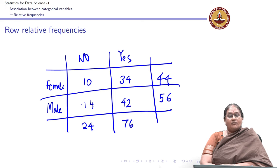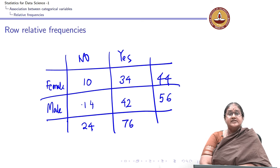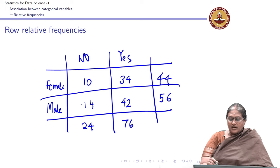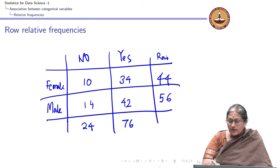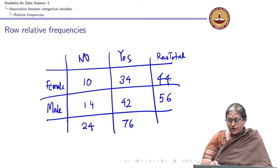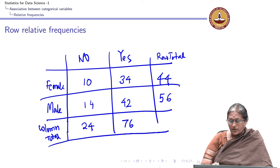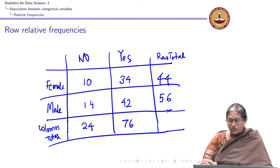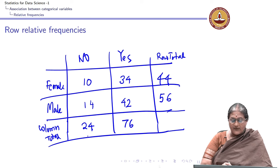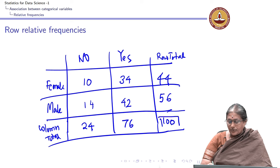Recall that this is the contingency table. The row totals are 44 females and 56 males. The column totals are 76 and 24. The total of the row totals and the total of the column totals are equal and they both add up to 100.